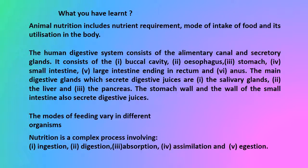To summarize: animal nutrition includes nutrient requirement, mode of intake of food, and its utilization in the body. The human digestive system consists of the alimentary canal and secretory glands — the buccal cavity, esophagus, stomach, small intestine, large intestine, ending in the rectum and anus. The main digestive glands that secrete digestive juices are the salivary glands, the liver, and the pancreas. The stomach wall and the wall of the small intestine also secrete digestive juices. The modes of feeding vary in different organisms. Nutrition is a complex process involving ingestion, digestion, absorption, assimilation, and egestion.